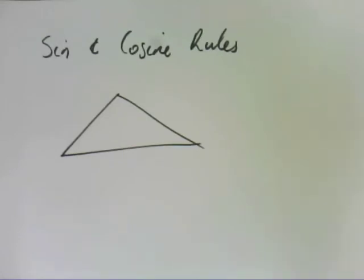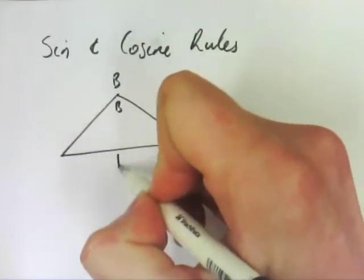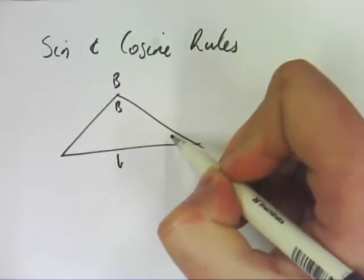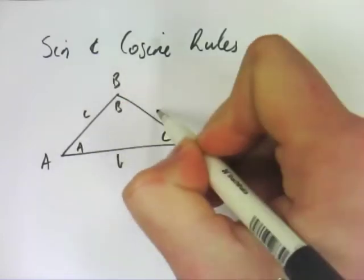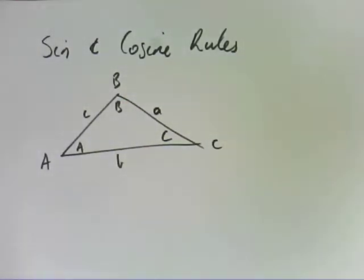So this is for non-right-angled triangles, and the same naming conventions as I talked about at the start apply here. So this is where it really starts being important that you remember where and what these angles are, and what they actually mean.